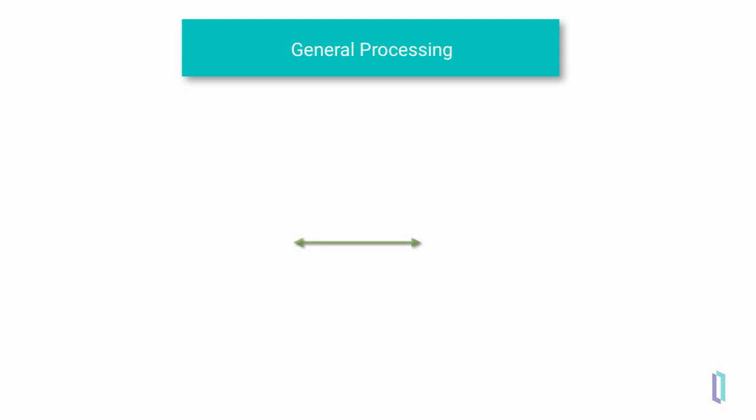Now let's look at an example of a more complicated message flow. This time, we will use a business process to orchestrate the flow of the messages, control the requests to the database, and combine the results to send back. As we go through this example, pay attention to the direction of the arrows representing requests and responses.